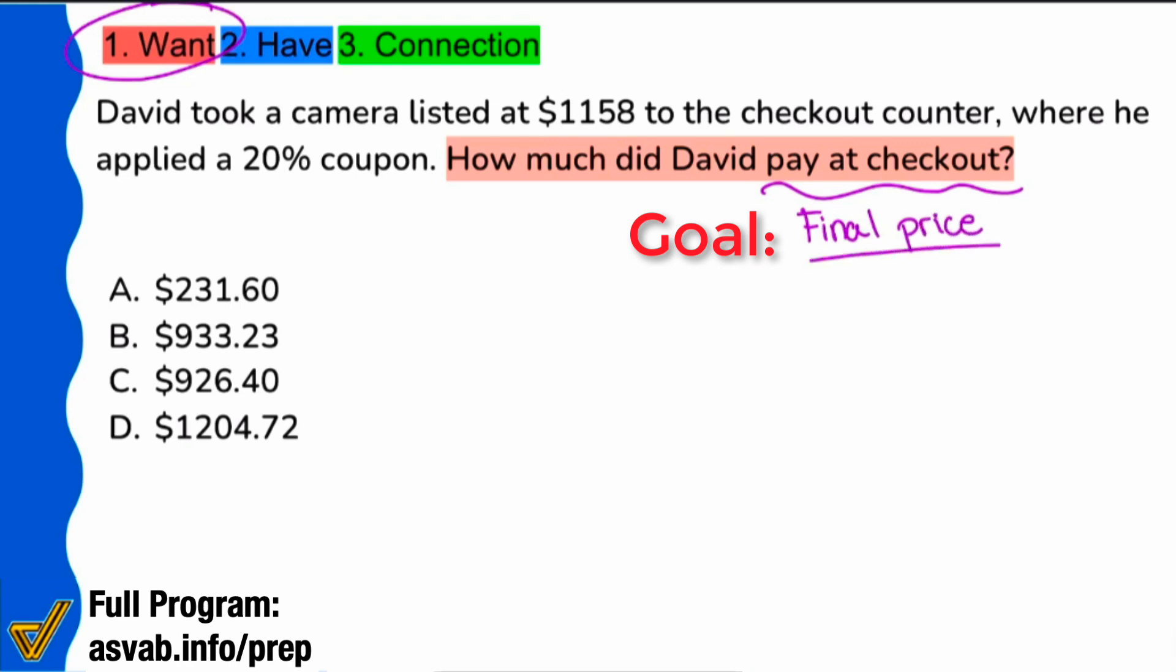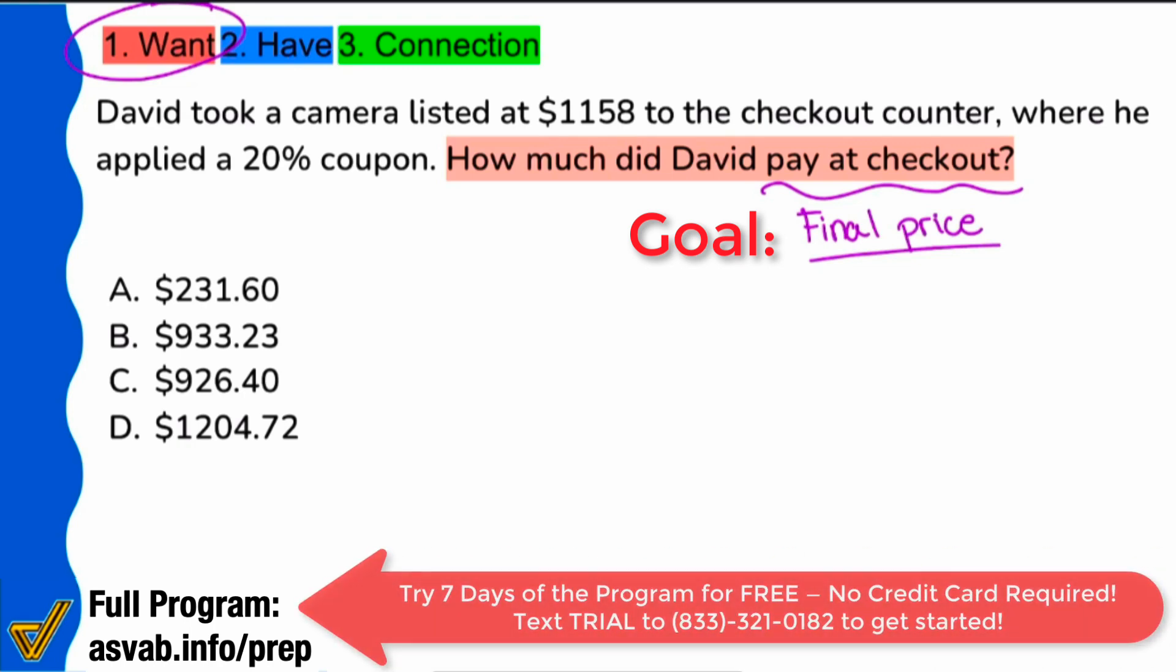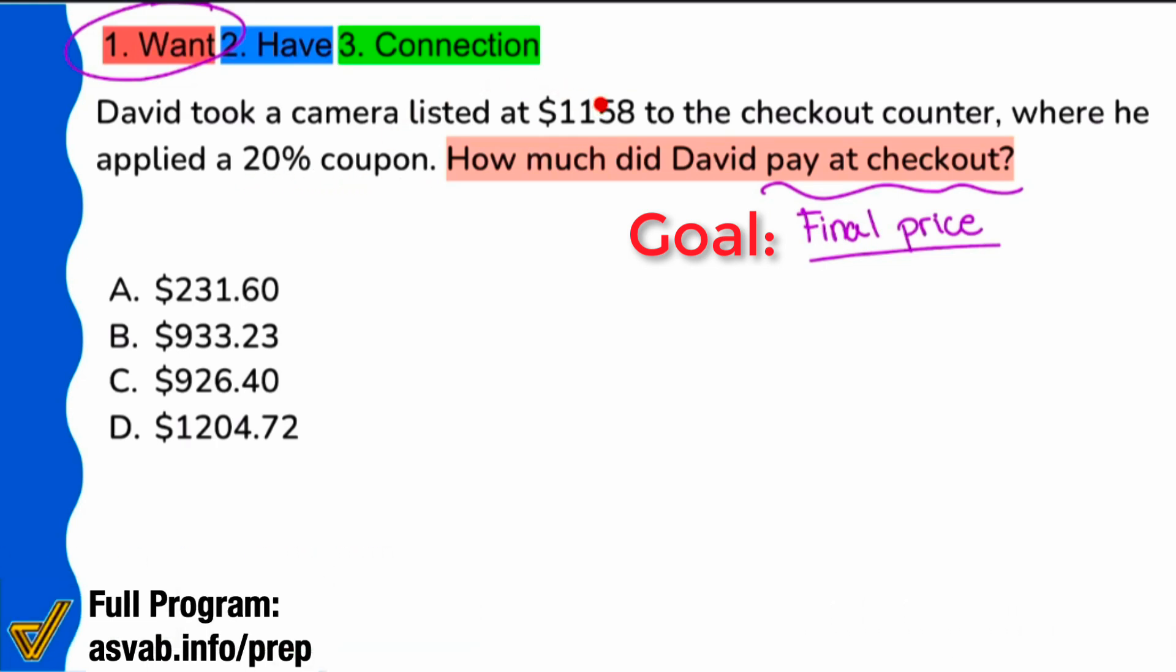Now it's very important to emphasize the goal, especially as you're starting to use the strategy for the first time for the simple reason being it's way too easy to look at what's given, listed at this price, this percent coupon. It's so easy to do 20% times this, and then you end up getting 231, but it's so easy to get it wrong just like that. Because if you apply a 20% coupon to that number, the result that you get would be the amount of the coupon, the dollar amount that you're saving, not the final price.